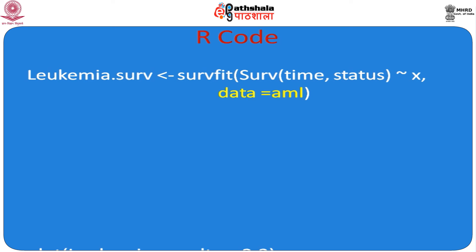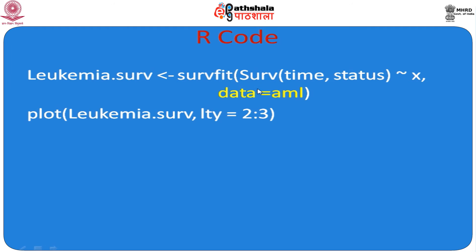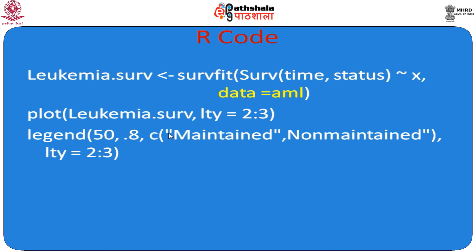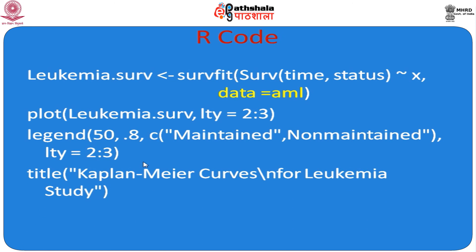To plot the data, we assign the survfit object to leukemia.surv and then call plot(leukemia.surv). One important thing is assigning a legend so that the maintained and non-maintained labels appear on the graph. If we put 50 for the x-axis position and 0.8 for the y-axis position, those coordinate values determine where the legend is placed to label the maintained and non-maintained curves.